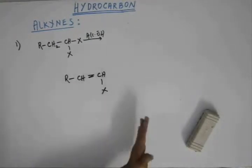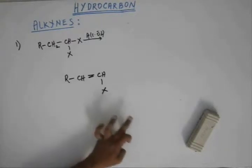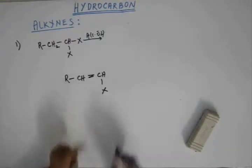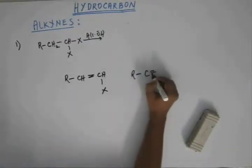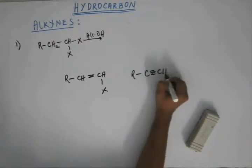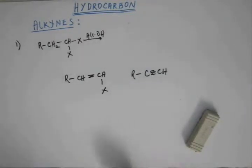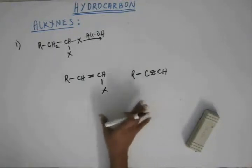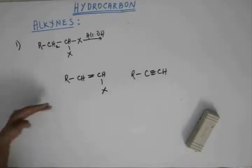If you carry out the second elimination step, again this halogen will come out and this hydrogen will come out, and you will have the alkyne. The second step, remember, will not be carried out by hydroxide — it has to be carried out by a stronger base like amide. So the whole mechanism remains the same, no difference.